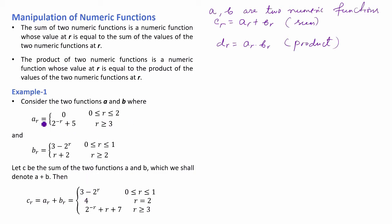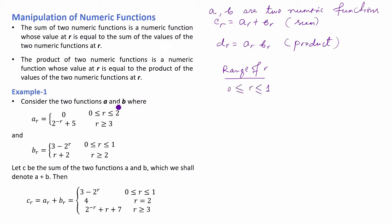In these two numeric functions a and b, we will see the common range. The value of numeric function a is equal to zero when r is greater than or equal to zero and less than or equal to two. For function b, the value is three minus two to the power r when r is greater than or equal to zero and less than or equal to one. So the common range is r greater than or equal to zero and less than or equal to one. For this range, the value is zero plus three minus two to the power r, which equals three minus two to the power r.